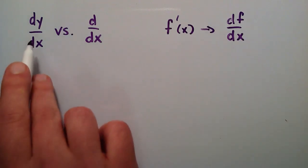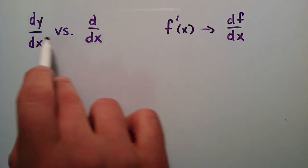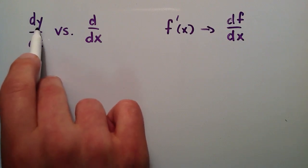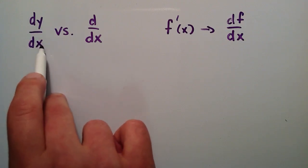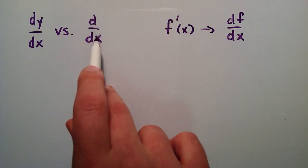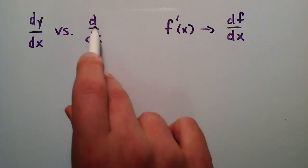So the big difference between these two is that this one explicitly says that it's taking the derivative of y with respect to x, where this one just says it's taking the derivative of something with respect to x, but it doesn't tell you what it is.